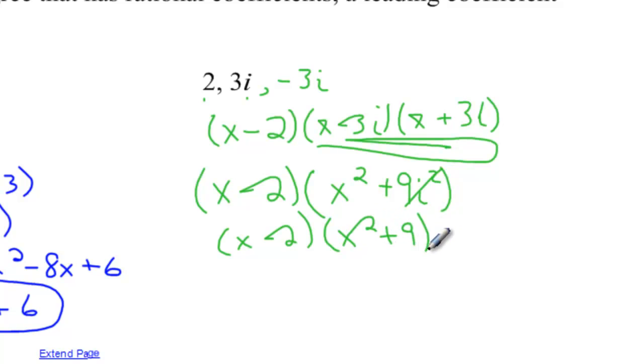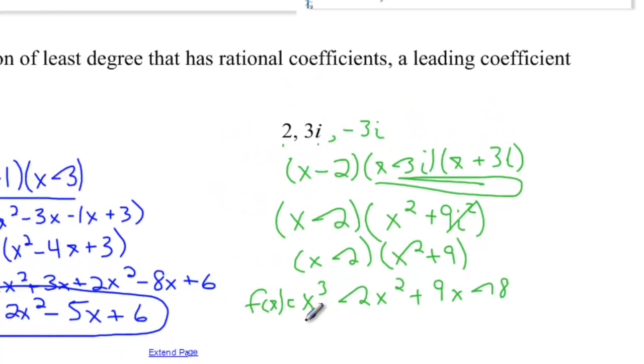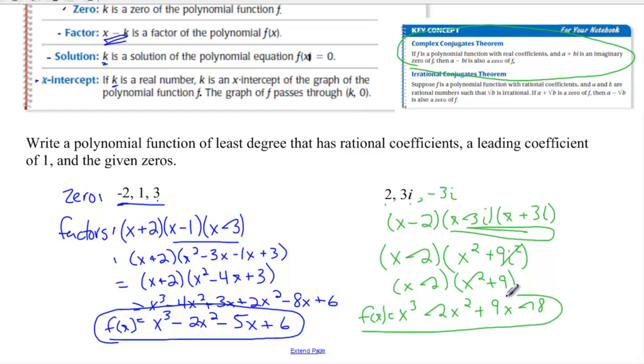...then I get x minus two times x squared plus nine, and I can then foil these and get x to the third minus two x squared plus nine x minus eighteen. And there's my polynomial, x cubed minus two x squared plus nine x minus eighteen. And we're good to go.